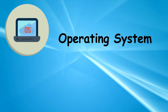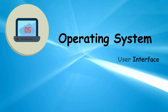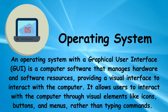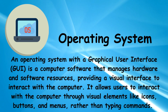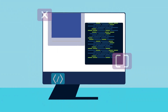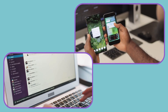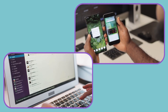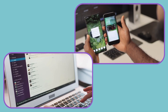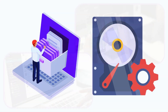An operating system, OS, is system software that manages hardware, software resources, and provides services for programs. It acts as an interface between the user and hardware, handling tasks like file and memory management.